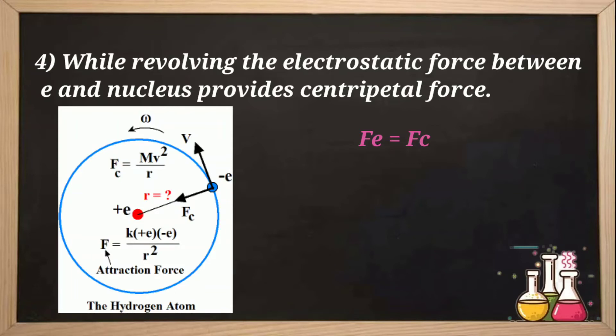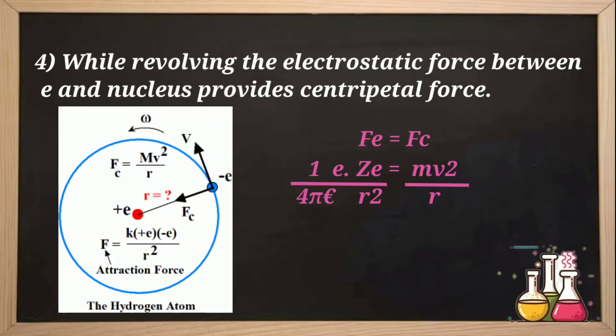So F_e and F_c become equal: (1/4πε₀)·Q1·Q2/R² equals m·v²/R. Let's move to the next postulate.